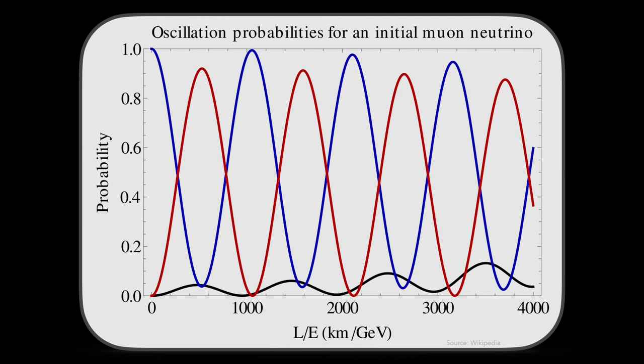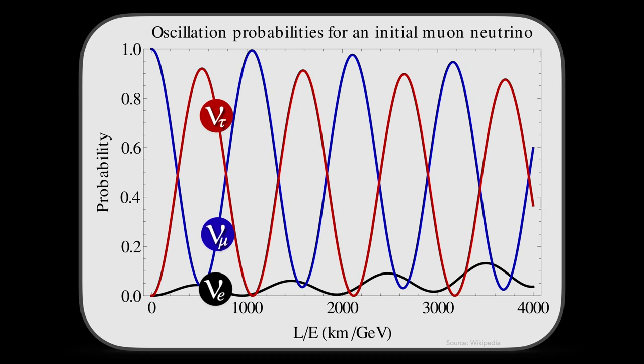Together, these two experiments have given rise to a groundbreaking conclusion. The neutrino oscillations require that the neutrinos have mass, otherwise they cannot change flavors. Understanding the quantum mechanics of these oscillations is key to explaining this phenomenon.